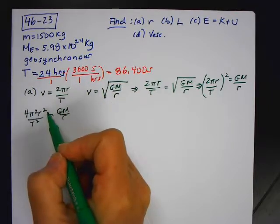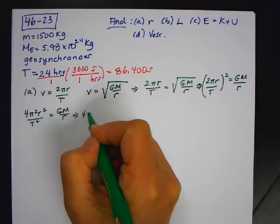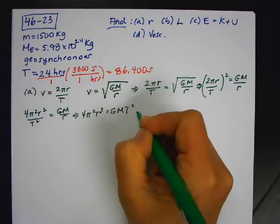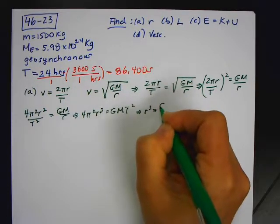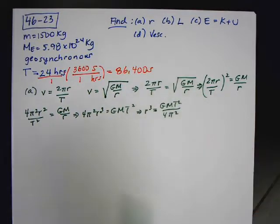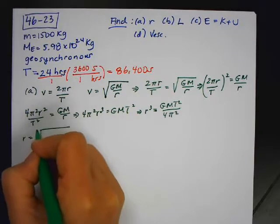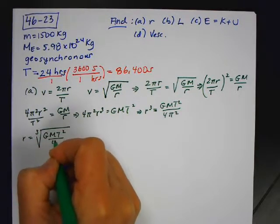So at this point, I cross-multiply this times this is this times that. So I'm going to have 4π² R³ is equal to GmT². So now I have R³ is equal to GmT² over 4π². And now I'm going to substitute in that R is equal to the cube root of GmT² over 4π².